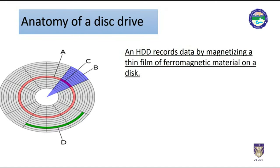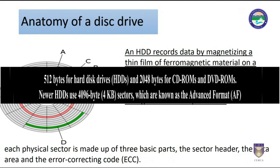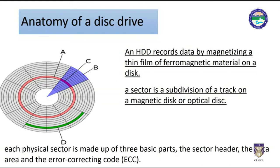In computer disk storage, a sector is a subdivision of a track on a magnetic disk or optical disk. Each sector stores a fixed amount of user-accessible data — traditionally 512 bytes for hard disk drives and 2048 bytes for CD-ROMs and DVD-ROMs. Newer hard disk drives use 4096 bytes, i.e., 4KB sectors, also known as advanced format. Geometrically, a sector is a portion of a disk between two radii and a corresponding arc, shaped like a slice of pie. The disk sector refers to the intersection of a track and a geometrical sector.